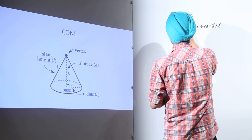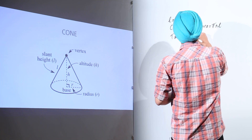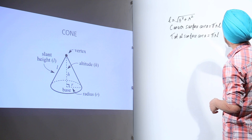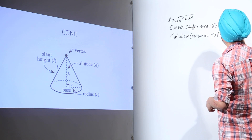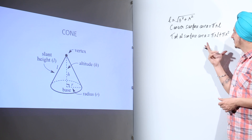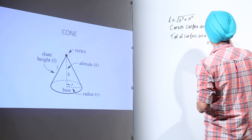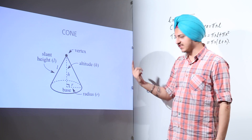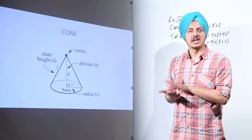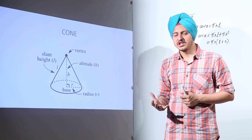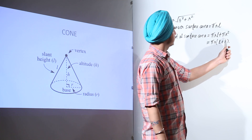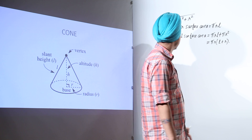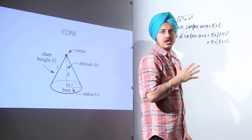Next is the total surface area of a cone. The total surface area equals the curved surface area, which is πRL, plus the area of the base, which is πR squared. So the total surface area is equal to πR(L + R). The base is a circular region, so its area is πR squared, giving us πRL + πR squared, which simplifies to πR(L + R).